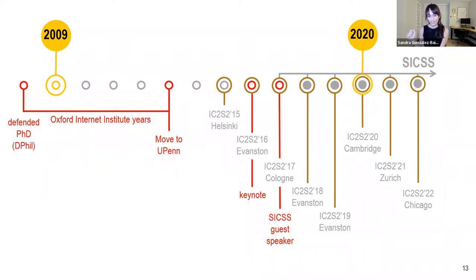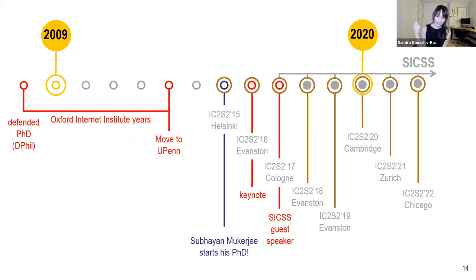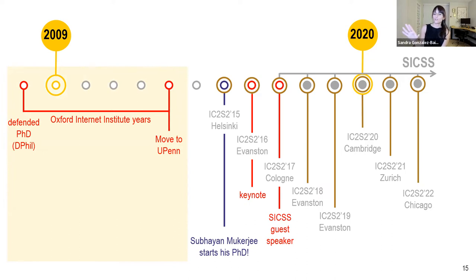I was at the Oxford Internet Institute as a research fellow until I moved to the Annenberg School at Penn. Then 2015 arrived — that was my first IC2S2 conference in Helsinki. The following year I was invited to give one of the keynotes at the second edition at Northwestern. In 2017 I was invited to be a guest lecturer at the very first Summer Institute in Computational Social Science at Princeton. I should also mention that 2015 is the year when Professor McCurdy started his PhD under my supervision at UPenn.